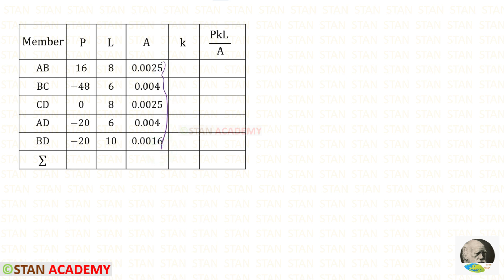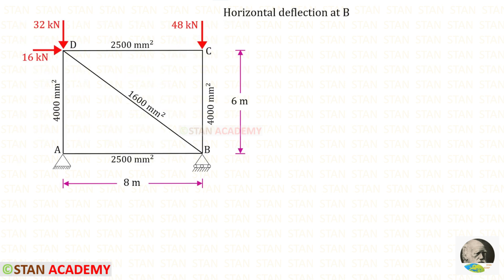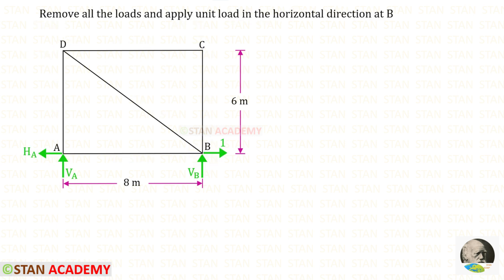Now we are going to find the values of K. First we are going to find the horizontal deflection at B. For that we have to remove all of the loads from the truss and then apply a horizontal unit load at B. I have applied the unit load towards the right side because I assume that the horizontal deflection occurs towards the right side. Later, if we get a negative value, that means our assumption is incorrect and we can change the direction.